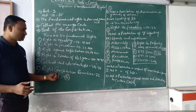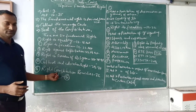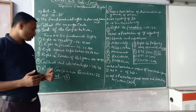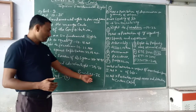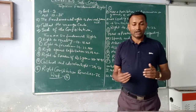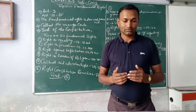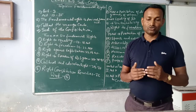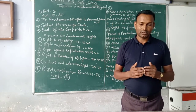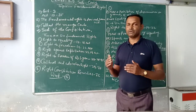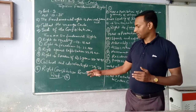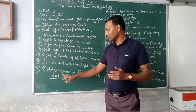Next is the Right to Constitutional Remedies — Samvidhanic Upchar Ka Adhikar. This is covered in Article 32. It means that if there is a problem with your constitutional rights, you have the right to move the Supreme Court and High Court for the enforcement of Fundamental Rights. We can approach the Supreme Court or High Court. Article 32 is related to writs.